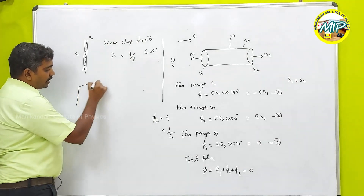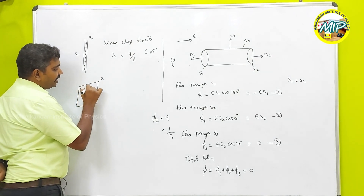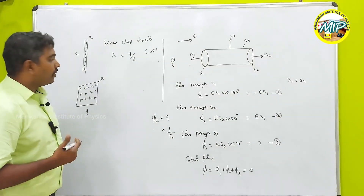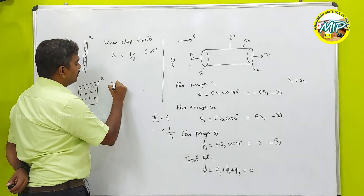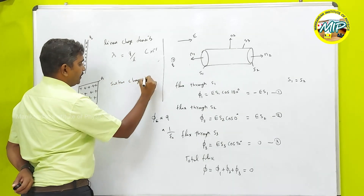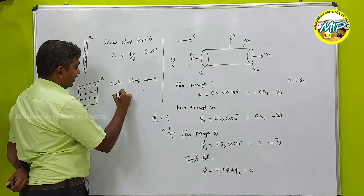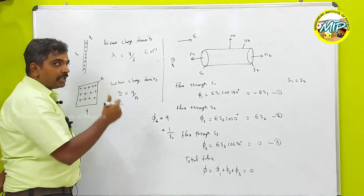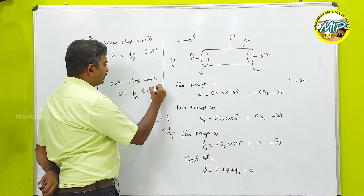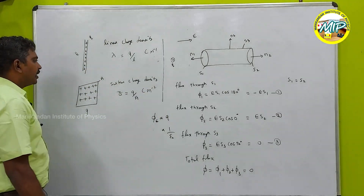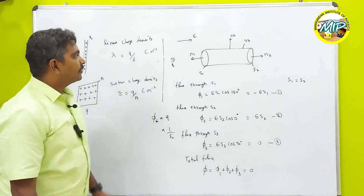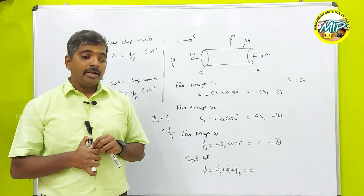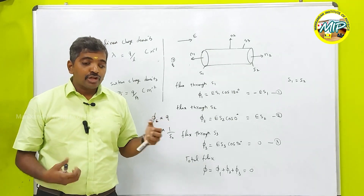The next quantity: consider a surface of area A filled with charge Q. This gives us the surface charge density, which is charge per unit area. In the next class, I am going to explain how to determine the electric field due to continuous charge distributions using Gauss's law.